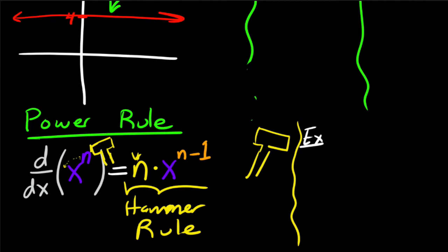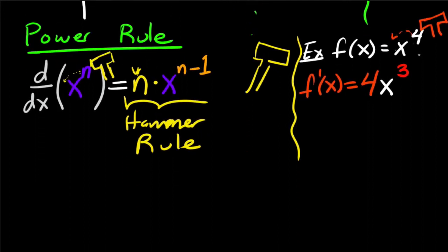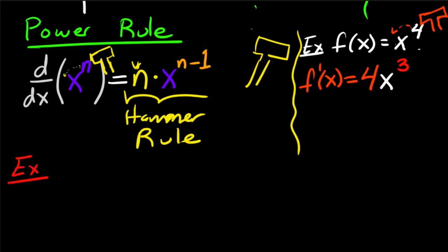For example, let's find the derivative of x to the fourth power. You use the power rule — bring down the hammer! The four comes down in front, and then x loses one power, giving you four x to the third. That's the derivative of x to the fourth.